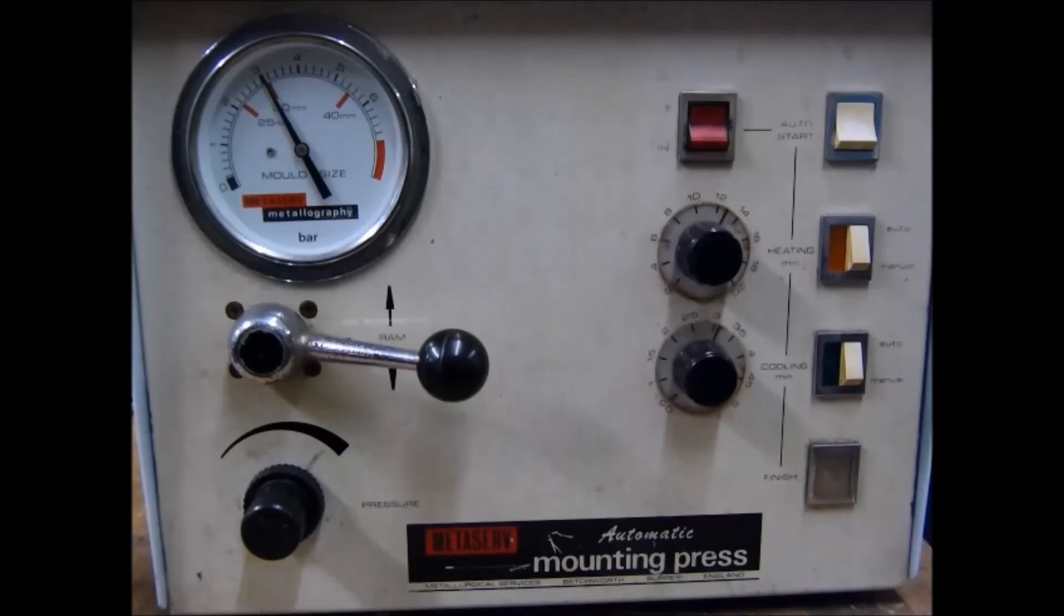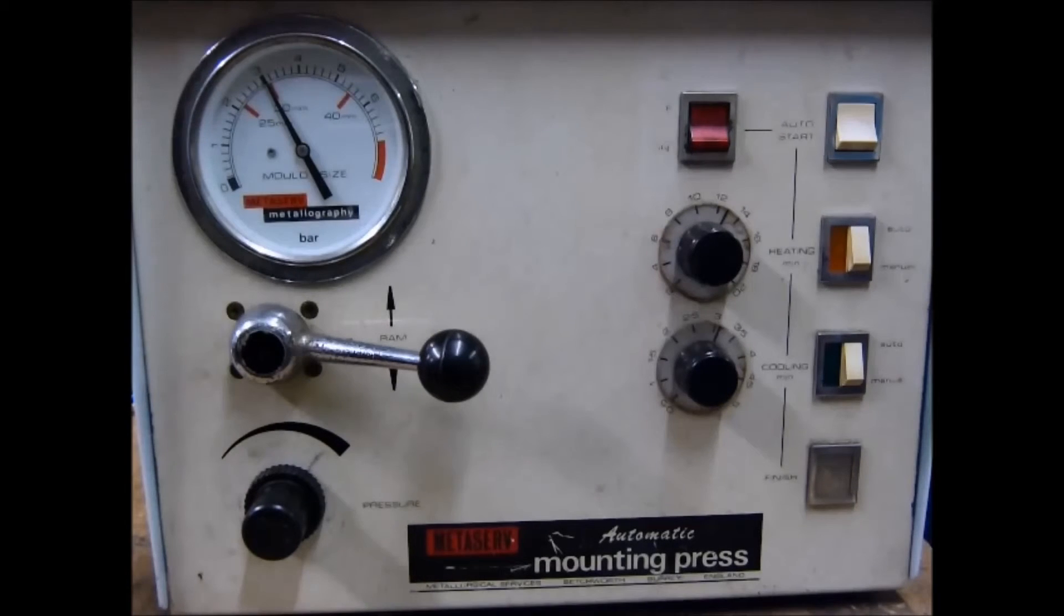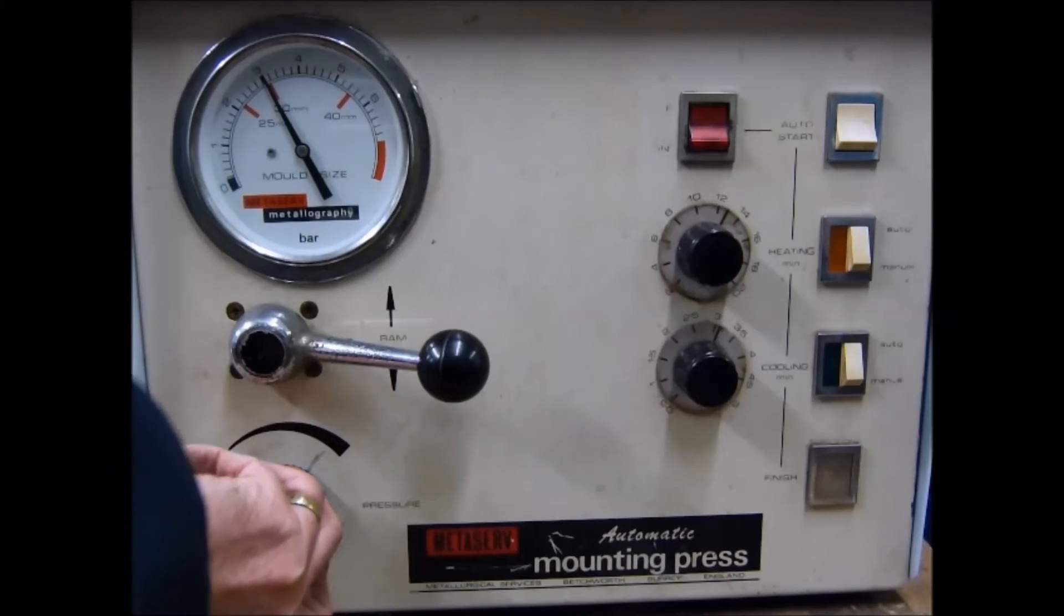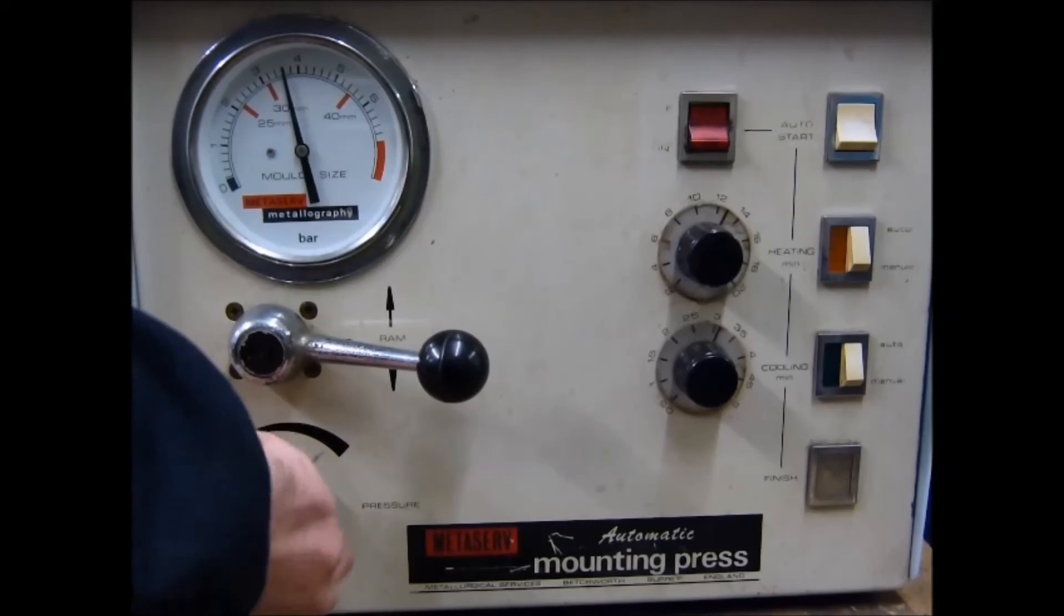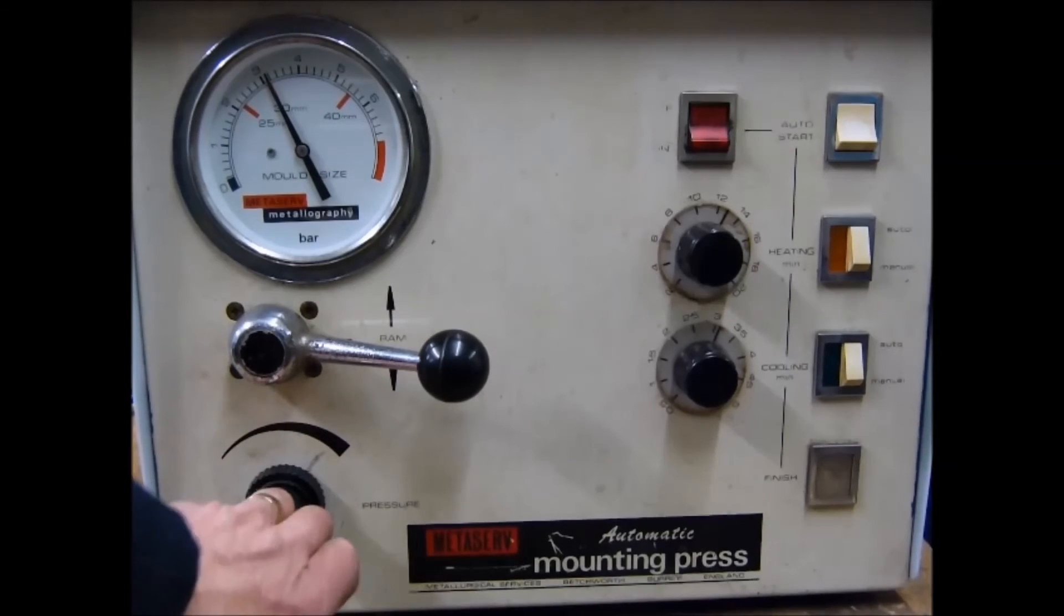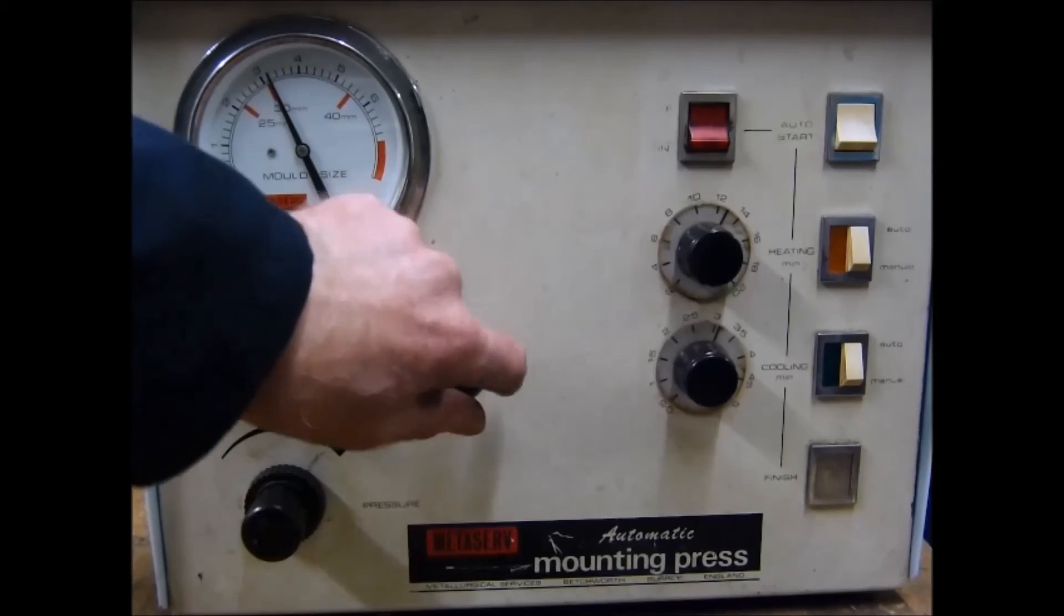Just to quickly go through the controls. On the gauge you will see there's 25, 30, or 40 millimeter - that is the mold size that you're using. So if you're using in this case 30 millimeter you would have a pressure regulator here by pulling it out and adjusting it until you reach the desired level, lock that in position. This is the ram down lever as I've mentioned before.